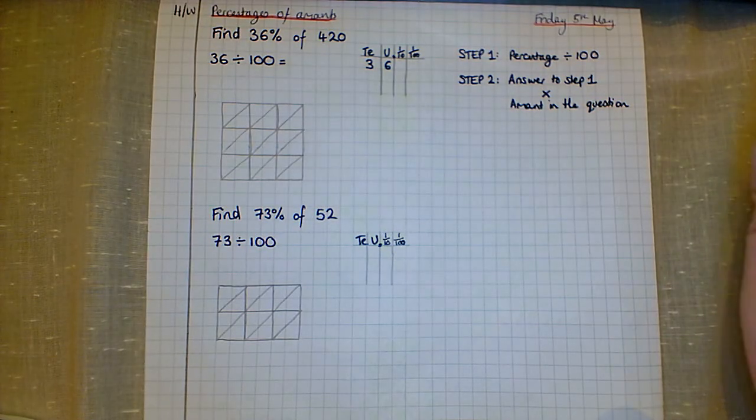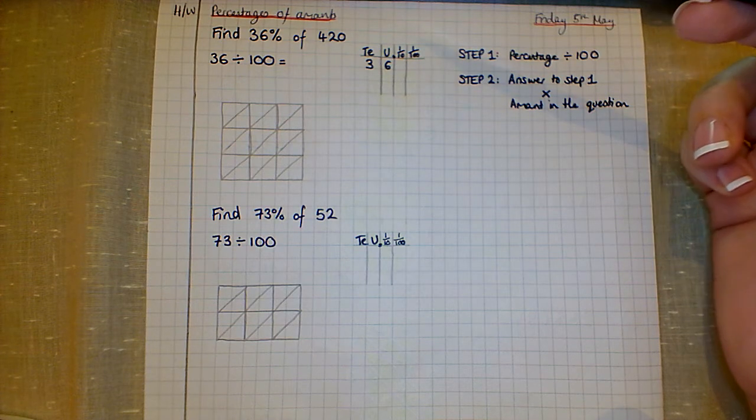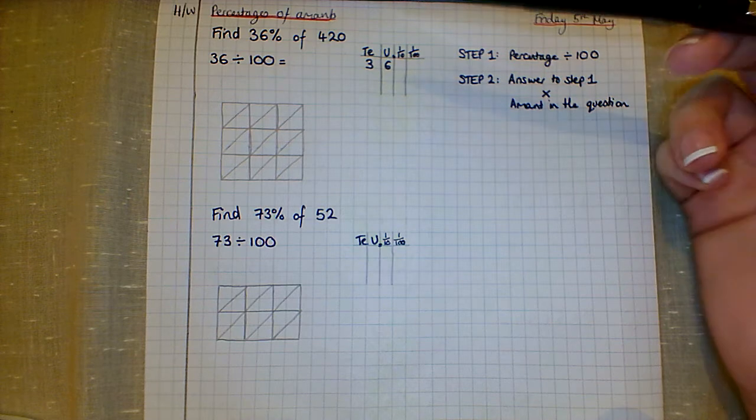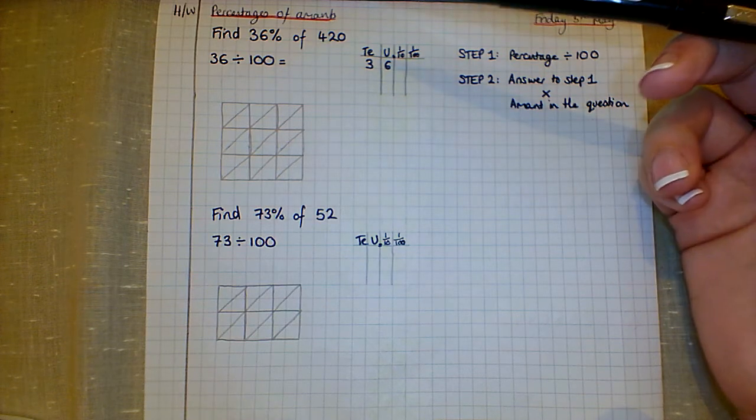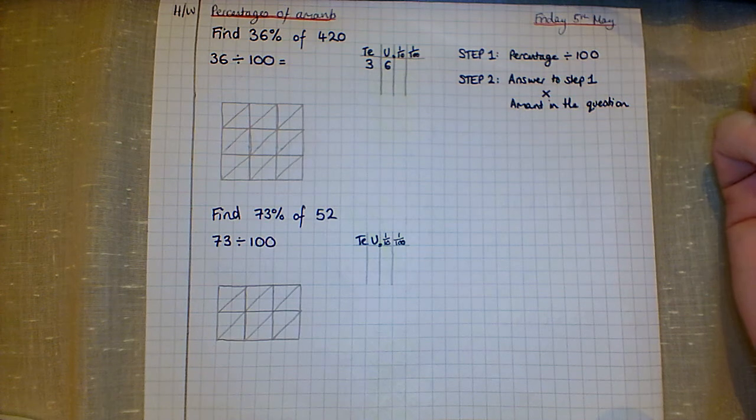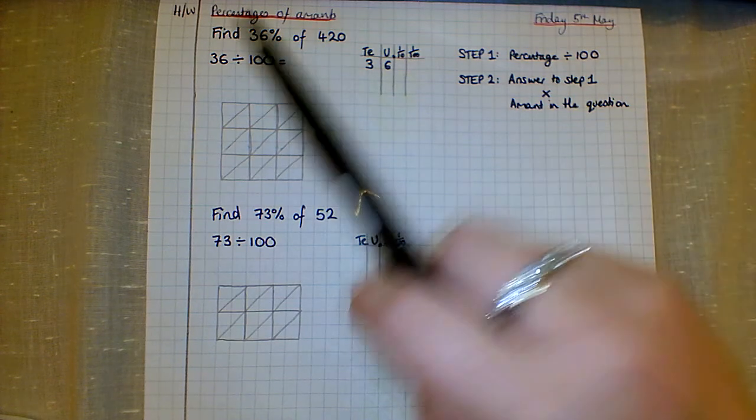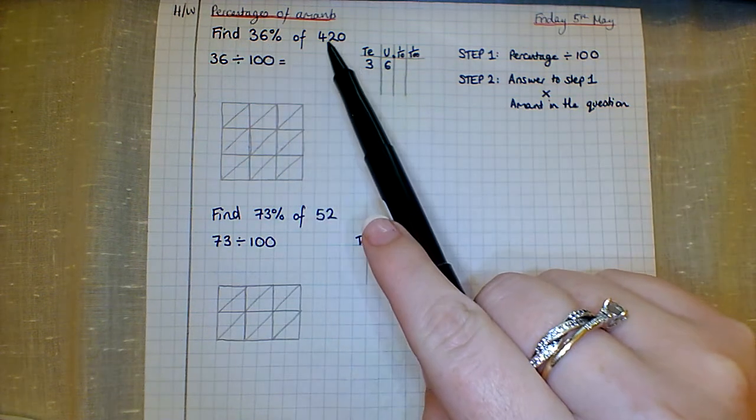I'm going to show you how to find the percentage of an amount using the Chinese method. I've done a different method with 7/3, but I think this one is better and more consistent. It's a lot simpler, so I thought I'd teach it to you in a video and hopefully you can try it on your homework. You're given your question: find 36% of 420.